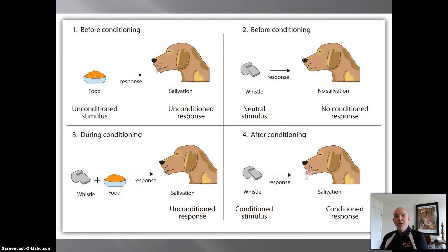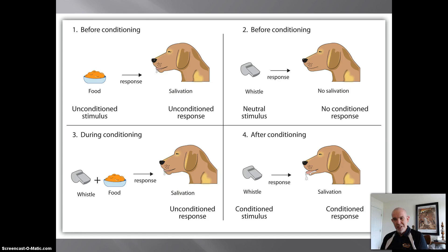After the conditioned response has been extinguished, you've gone through spontaneous recovery and it completely extinguishes — can we ever bring the CR back? Yes, we can. We simply put the animal through another acquisition phase and re-pair the conditioned stimulus with the unconditioned stimulus. The dog learns even faster the second time around. Classical conditioning still occurs in the brain at an unconscious level that we have very little control over, which is why we could theoretically alternate between acquisition and extinction for a long time.